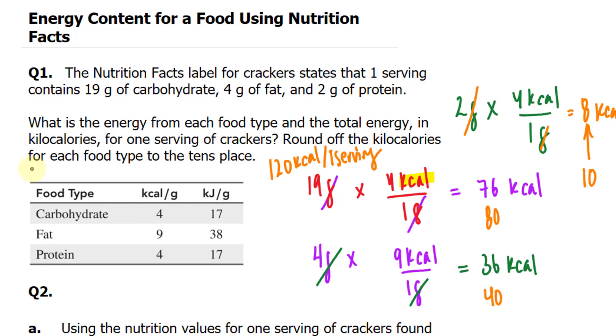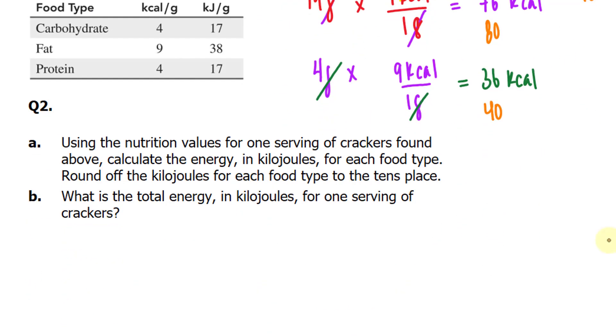But really, I don't see a point to it. I'm just following the question. Moving on to question 2. Using the nutrition values for 1 serving of crackers found above, calculate the energy in kilojoules for each food type and round the kilojoules for each food type to the tens place.